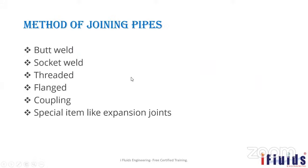The methods of joining pipes are: first, butt weld; second, socket weld; third, threaded or screwed end — which is commonly used in residential buildings; fourth, flanged; fifth, coupling for quick disconnect and reconnect; and special items like expansion joints or bellows to connect one pipe to another.